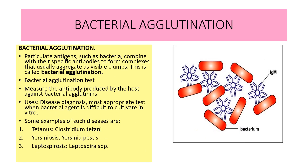The last type is bacterial agglutination. Particulate antigens such as bacteria combine with specific antibodies to form complexes that aggregate as visible clumps — this is bacterial agglutination. It measures the antibody produced by the host against the bacterial agglutinin. Bacterial agglutination is used for disease diagnosis and is most appropriate when the bacterial agent is difficult to cultivate in vitro. It is used for tetanus (Clostridium tetani), yersinosis (Yersinia pestis), and leptospirosis (Leptospira species).